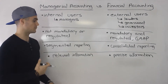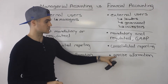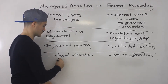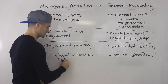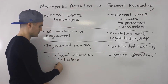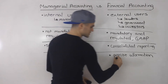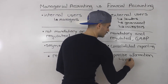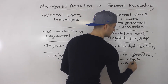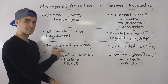Another difference is the type of information that both use. Managerial accounting is more concerned with relevant information, while financial accounting is more concerned with precise information. There may be different terms in your textbook — you may see timeliness or flexible information for managerial accounting, while for financial accounting you may see terms like verifiable information or reliability.